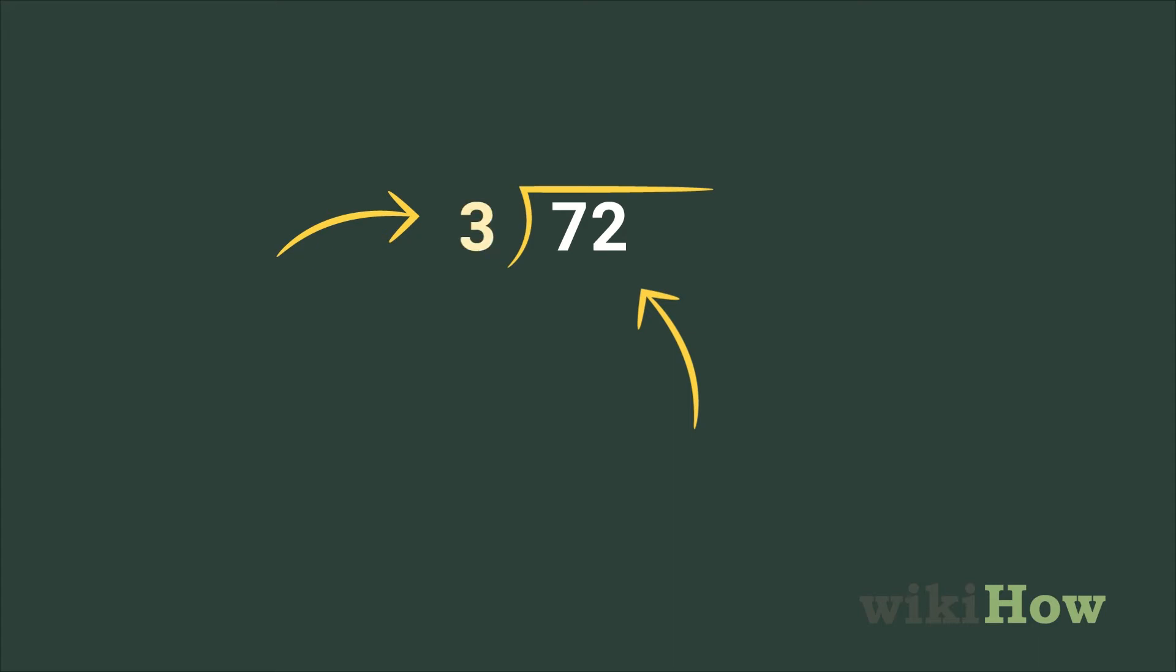Then, calculate how many times 3 goes into the first number under the division bar. In this case, you're calculating how many times 3 goes into 7. The answer is 2, with 1 left over. Write the number 2 above the bar, and the remainder, in this case 1, below the 7.